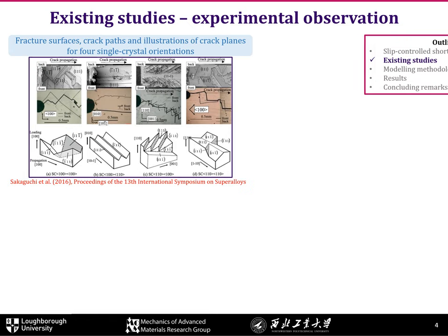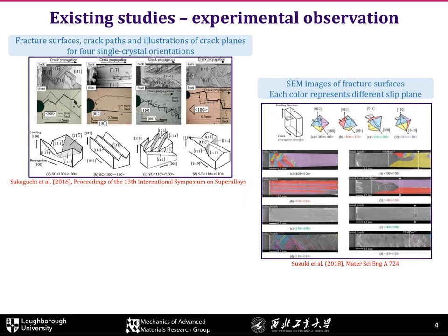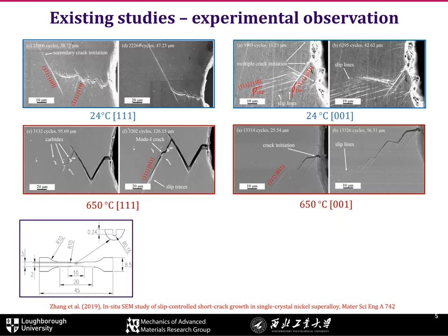There are several experimental techniques we can use to study microcrack initiation and propagation. For example, by comparing the crack path with the crystal structure, the controlling slip system can be identified, or using SEM can help us gain better insight into the fracture surface around the crack. If needed, FIB technique can be used to characterize the 3D geometry of cracks to show how they grow along or switch slip planes. This is work from our group using in-situ SEM to obtain real-time crack path, which is the experimental basis of my modeling work.